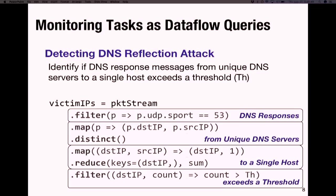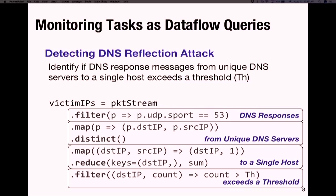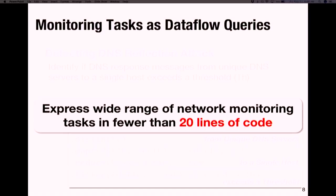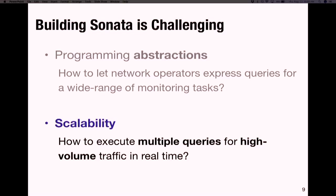This is one simple example of expressing a high-level network monitoring task using standard dataflow operators familiar to network operators. We observed this was very helpful because we were able to express a wide range of network monitoring tasks in fewer than 20 lines of code. Now that we've allowed network operators to operate on all packet fields in all packets, we've set ourselves against a very steep scalability challenge.